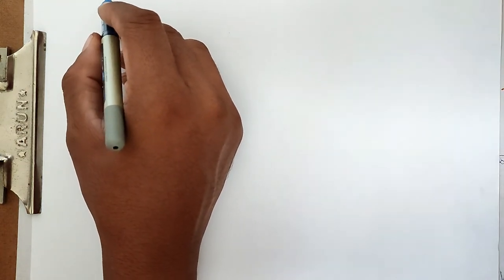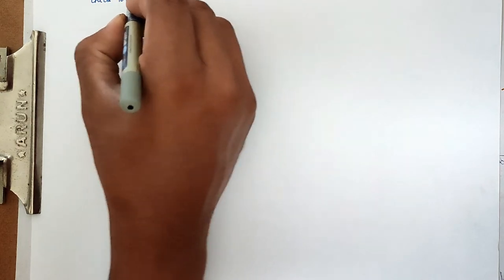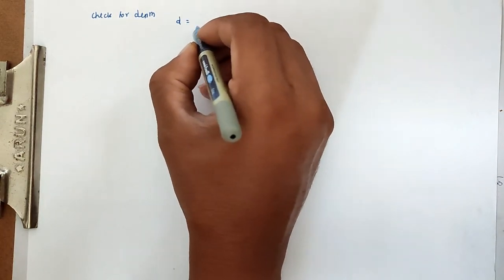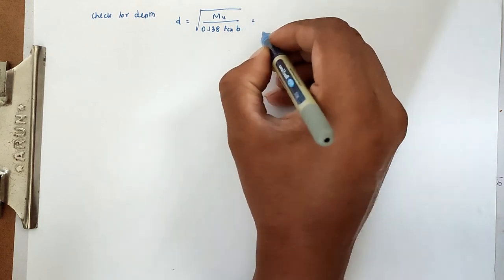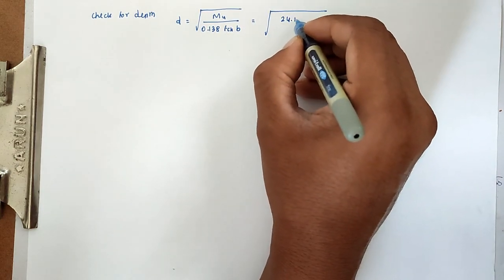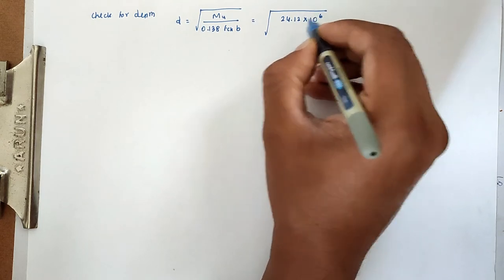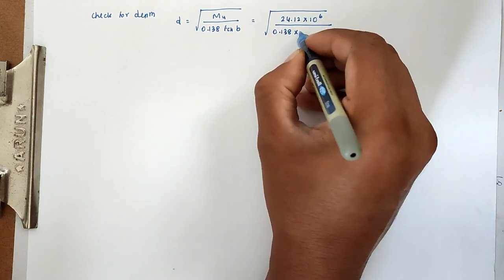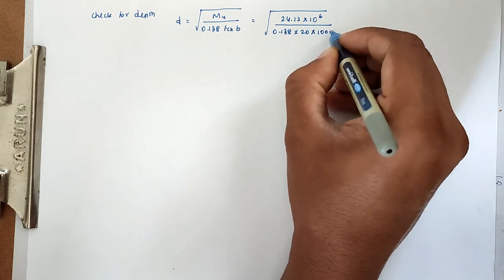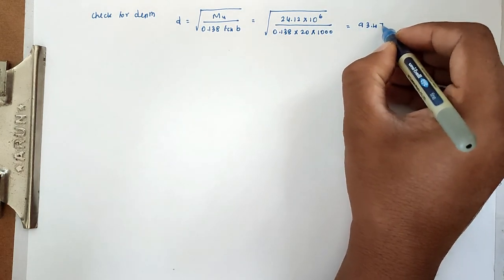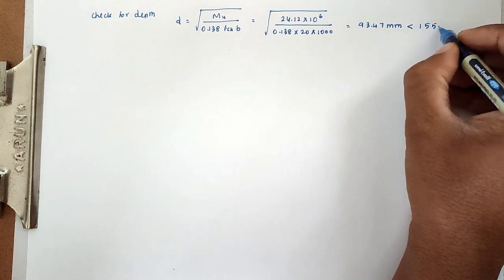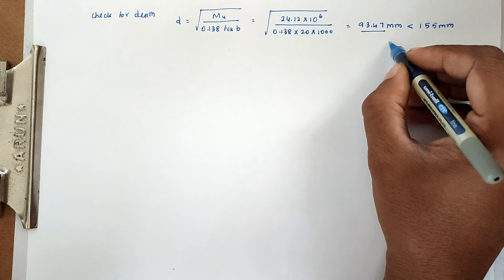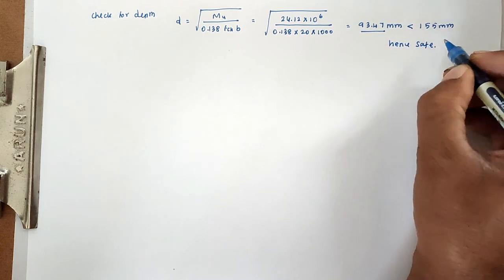Before calculating reinforcement detailing, we check the depth. D = √(Mu / (0.138 × fck × B)). Substituting Mu = 24.12 × 10⁶ Nmm, fck = 20, B = 1000mm, we get D = 93.47mm. The effective depth provided is 155mm, which is greater than 93.47mm, hence the depth is safe.